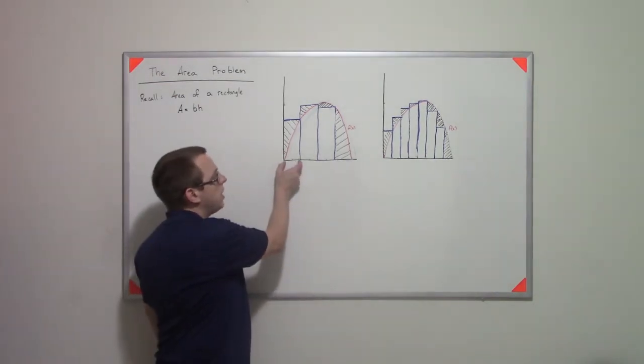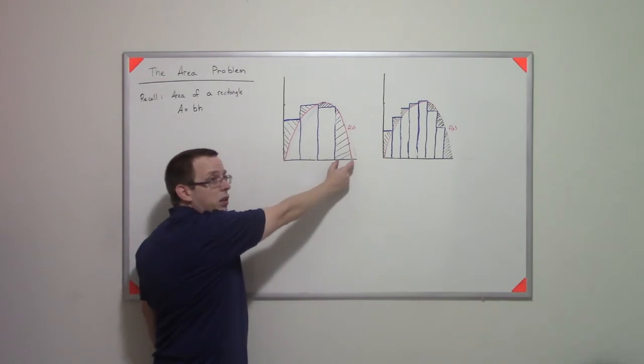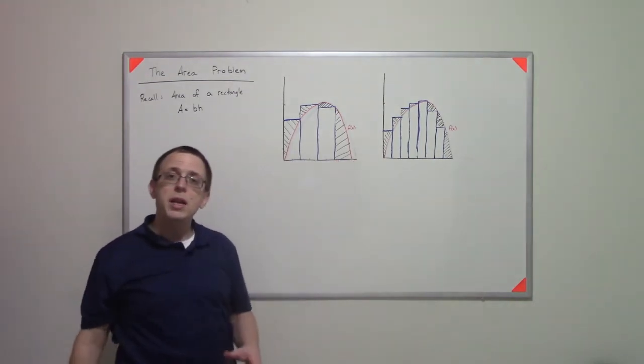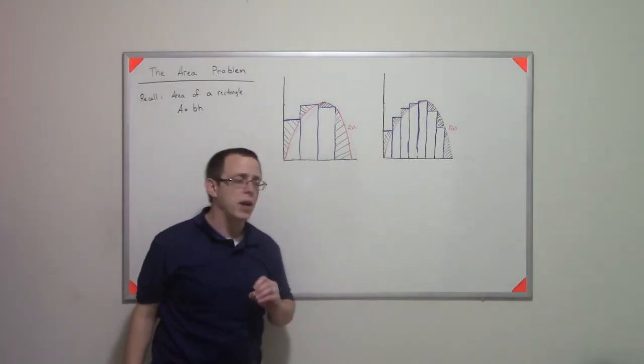Well, the base is simply going to be the x distance. So it's 2, 2, 2, and technically 2 over here. But I need to figure out the height of these rectangles.